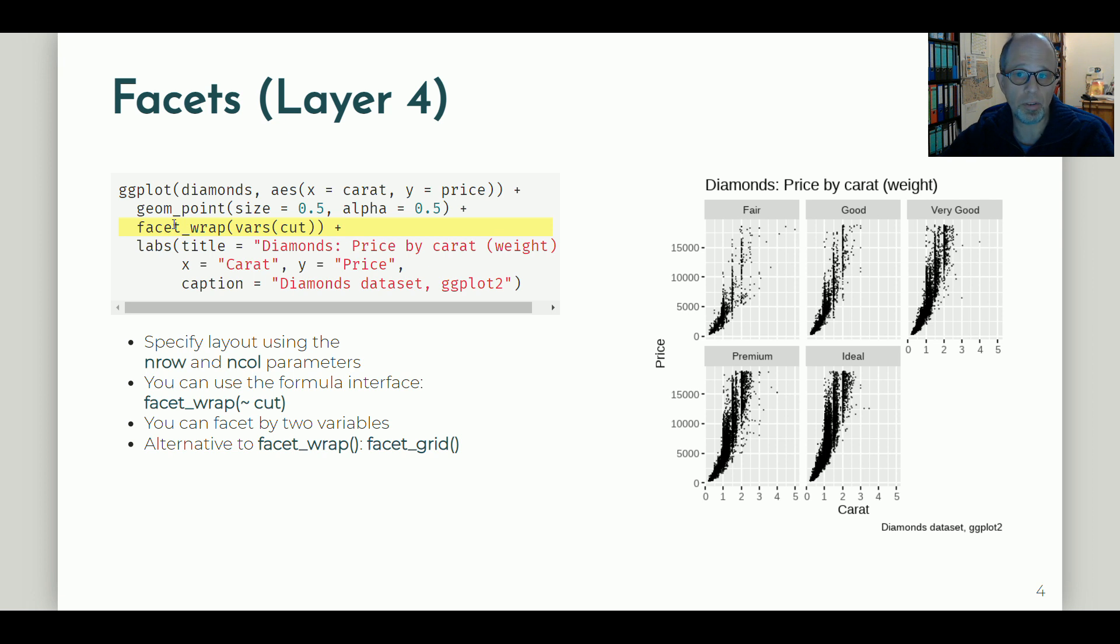This is one of the strong points of ggplot2 I think. Compare this to a workflow where you would create five separate plots in Excel for example and then arrange them somehow in a report or presentation. Here you get one plot as a result. It's one image, and you can specify the layout using the n-row and n-column parameters which I didn't do above.